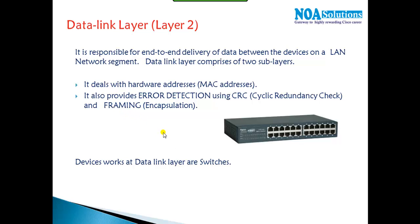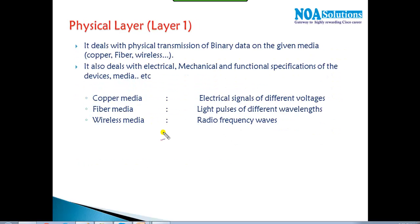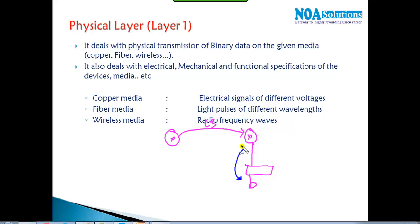When a router sends data to the next router, that is Layer 3's job. When the router identifies a device within the LAN, that is Layer 2's job — what the data link layer defines. So the network Layer 3 defines what happens in the WAN, mostly routing, while Layer 2 handles LAN communication.